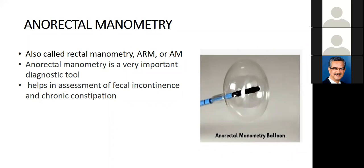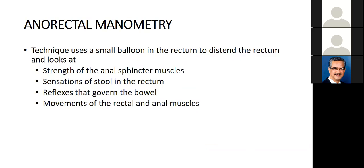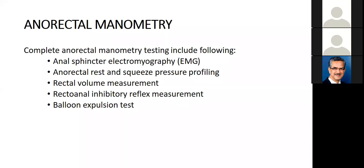In patients with fecal incontinence due to weak sphincter muscles, pelvic floor rehabilitation is the first line of treatment, including bowel management education, pelvic floor muscle training (Kegel exercises), biofeedback therapy, electrical stimulation, and manual myofascial release. Anorectal manometry is an important diagnostic tool for assessing fecal incontinence and chronic constipation. The technique uses a small balloon inserted into the rectum to assess sphincter strength, sensation, reflexes, and rectal and anal muscle movement. Complete anorectal manometry includes anal sphincter electromyography, resting and squeeze pressure profiling, rectal volume measurement, the anorectal inhibitory reflex, and balloon expulsion test.